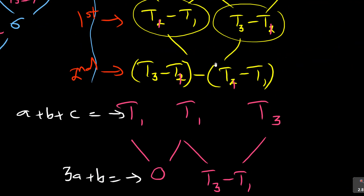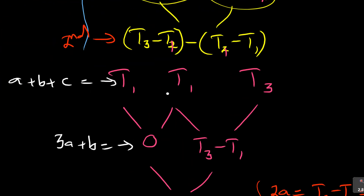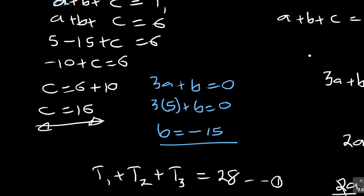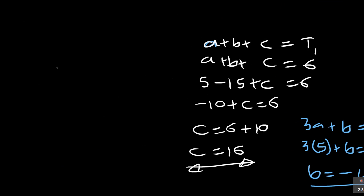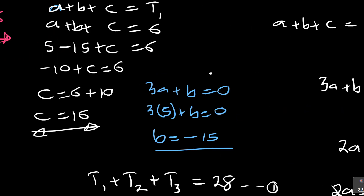So c equals 16 — positive, which matches what we expected. Therefore the general term is: tn equals 5n² minus 15n plus 16.